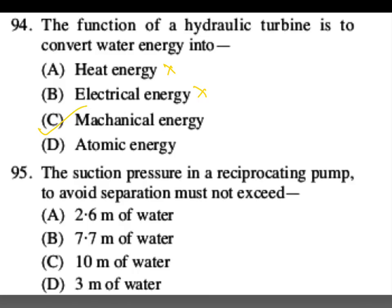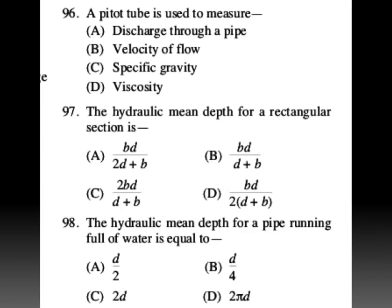The suction pressure in a reciprocating pump to avoid separation must not exceed 7.7 meters of water. B is your answer. A Pitot tube is used to measure stagnation pressure as first priority; if stagnation pressure is not in the options, then velocity of flow. B is your answer.